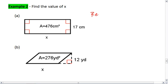For this first one, we have a rectangle and we know that the area for a rectangle is length times width. In this case, our length is x, our width is 17 and we're given our area. So we can plug these in. We get 476 equals x times 17.